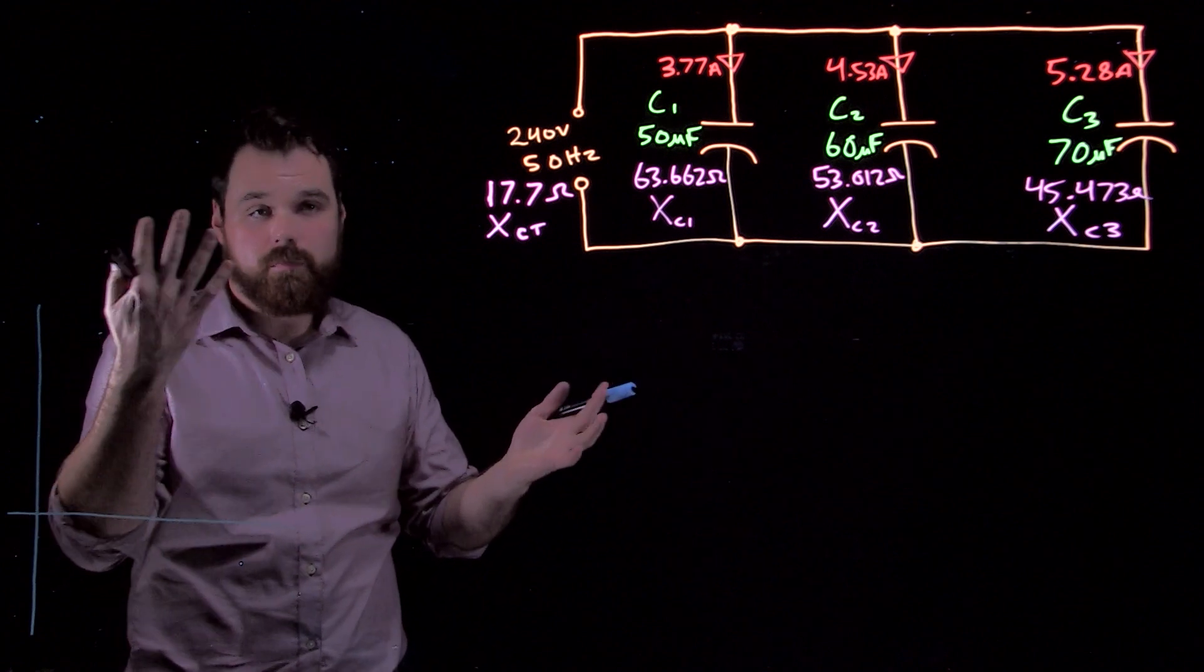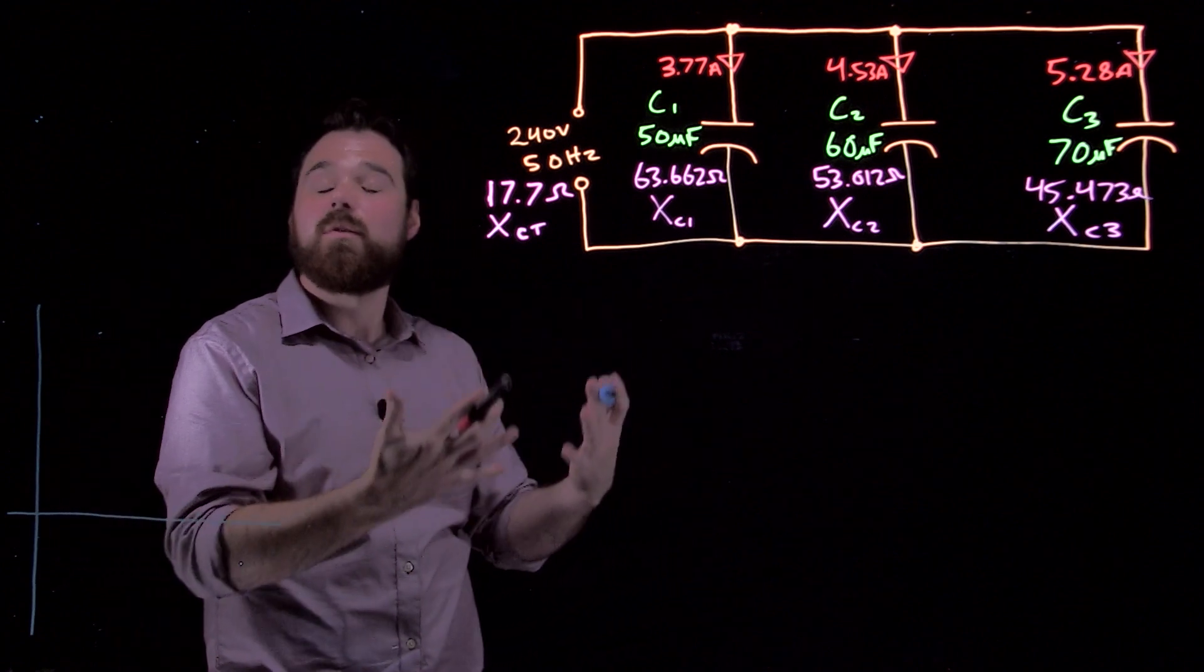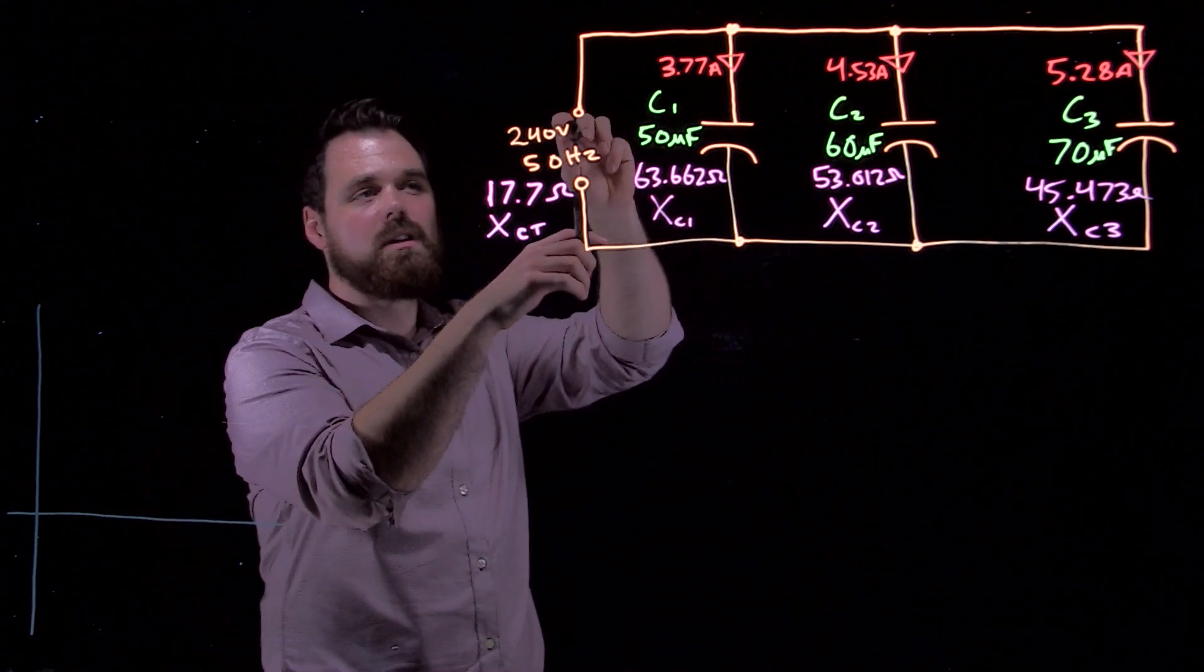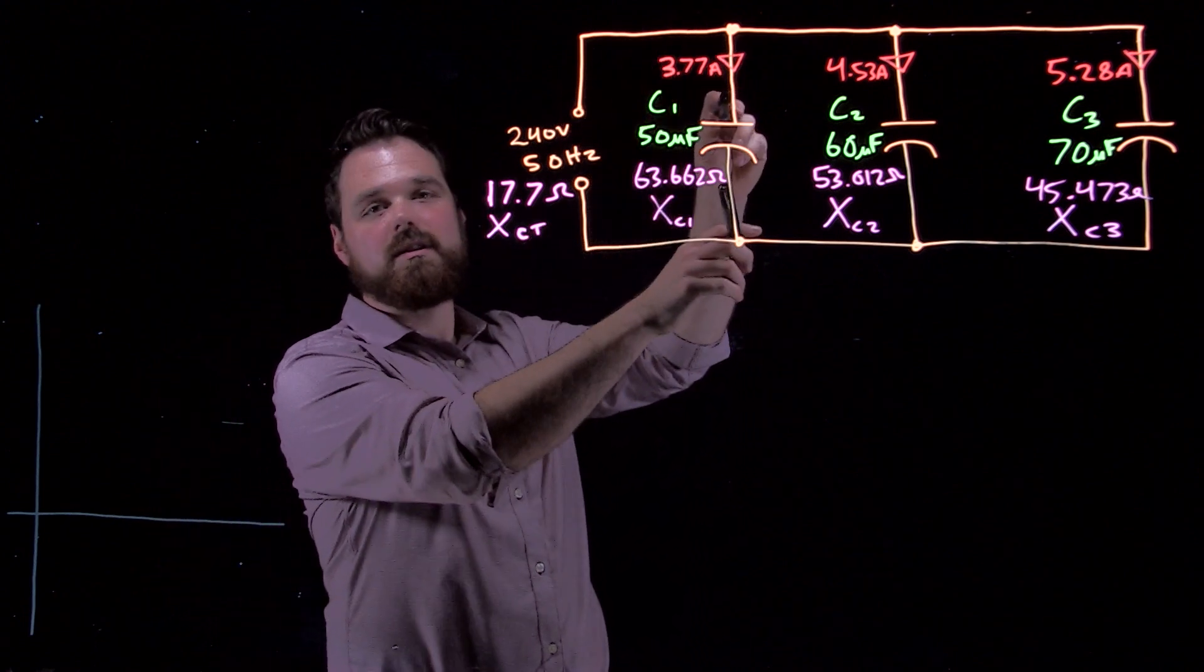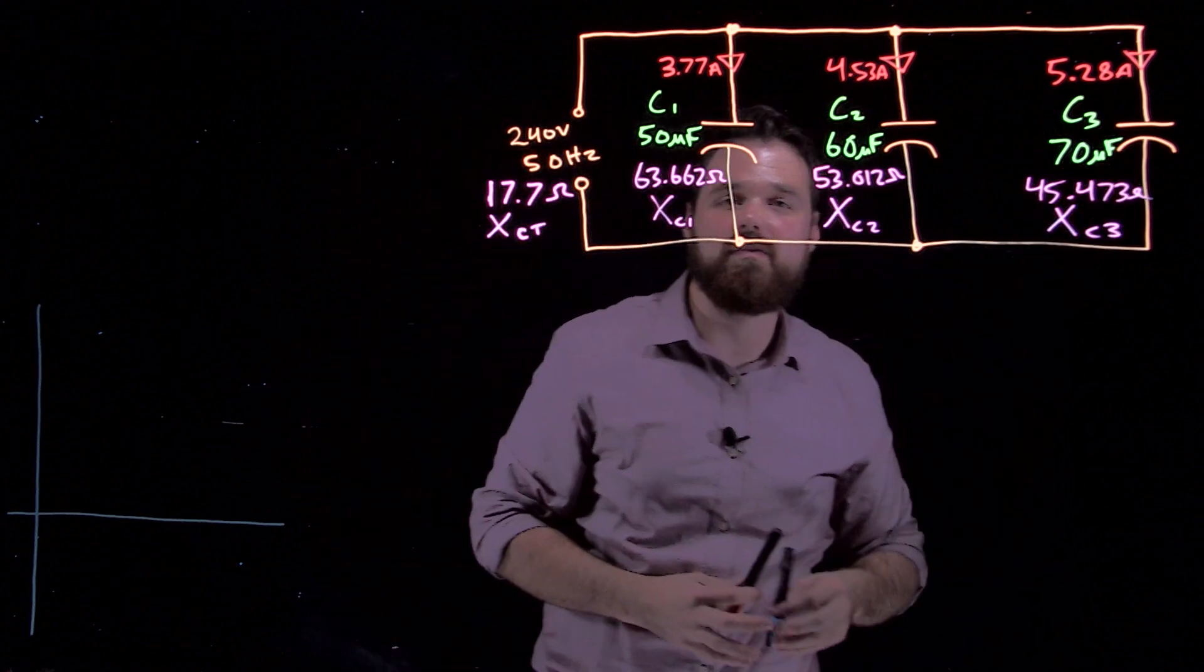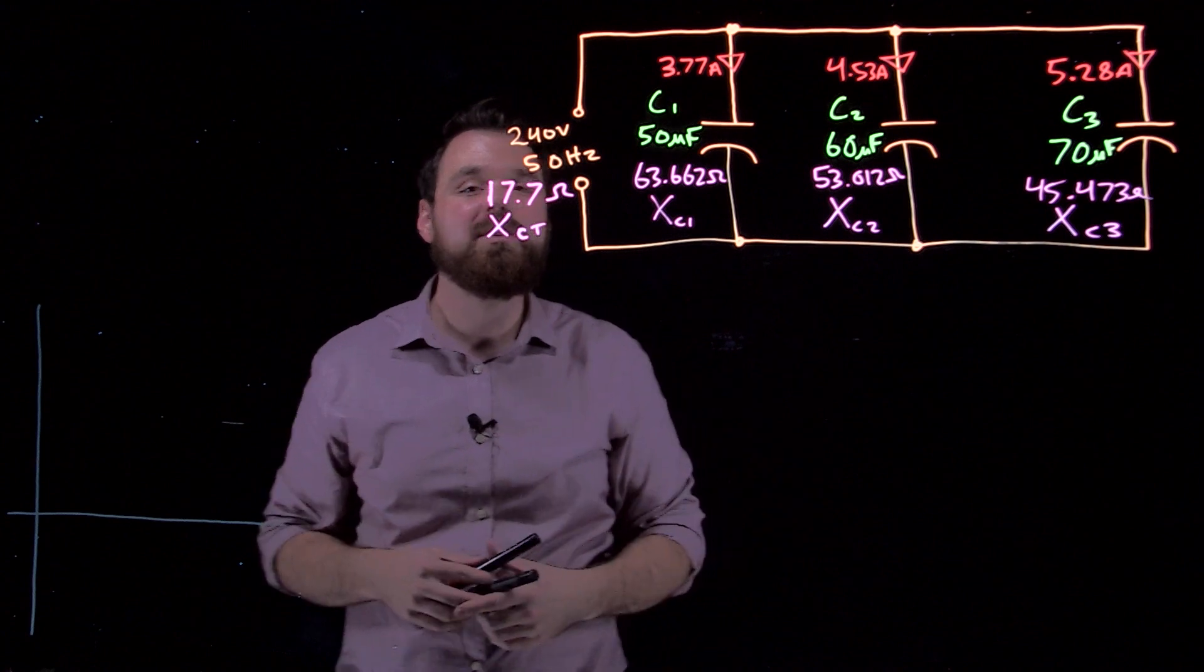What we should know is voltage in a parallel circuit. The voltage across our source is actually going to be the same as the voltage in the first branch, same in the second branch, and same in the third branch. Our voltage is the same throughout.